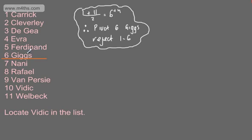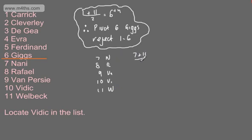We know that Giggs is going to be earlier in the alphabet than Vidic, so we've reduced our list. The next list is positions 7 through 11: Nanny, Raphael, Van Persie, Vidic and Welbeck. If we consider 7 plus 11 over 2, that gives me 18 over 2, which is 9. Therefore, the 9th value is going to be my pivot, and the pivot is Van Persie.